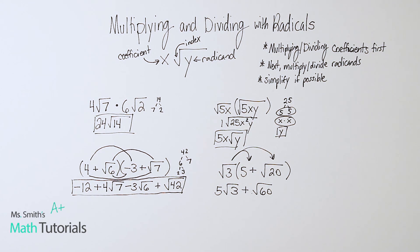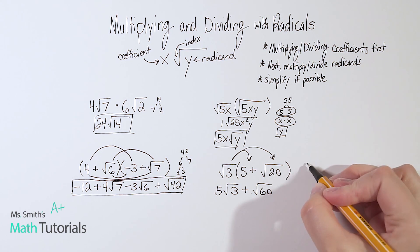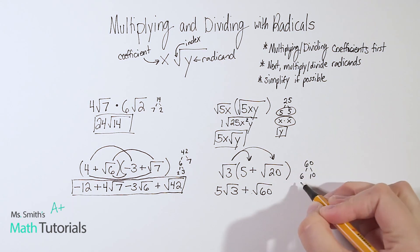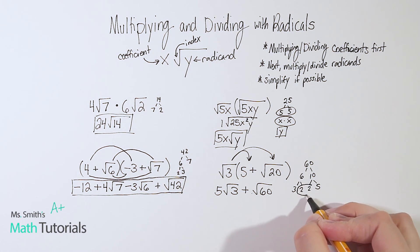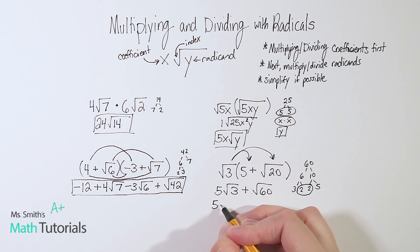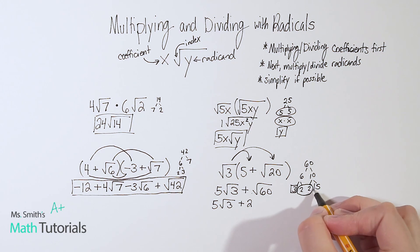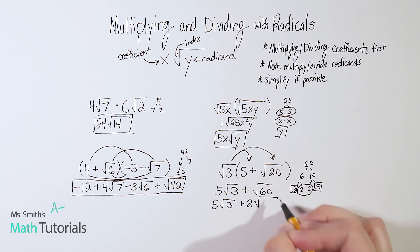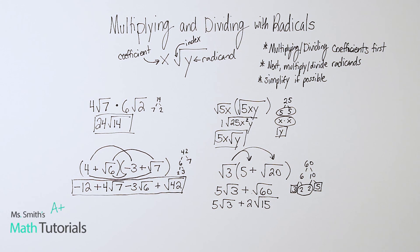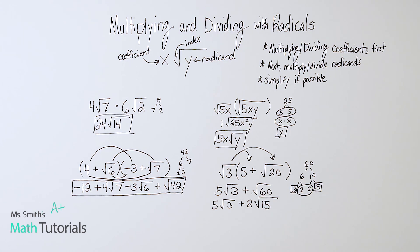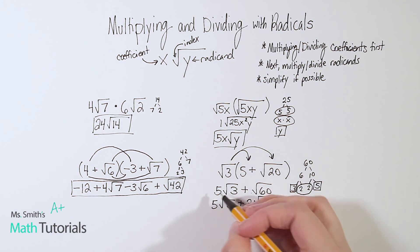And now we'd want to reduce if possible. Let's see, 60 I know can be broken down. Let's see, 6 and 10, 3 and 2 and 5. Looking for pairs of 2 because I've got an understood 2 in there. So that's, let's see, 1, 2 that can come out. The 3 and the 5 are stuck underneath the radical. We can go ahead and reduce 3 times 5 which is 15. So 5 square root of 3 plus 2 square root of 15. That's as low as it goes. That's its simplified form.